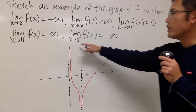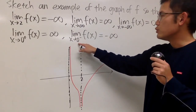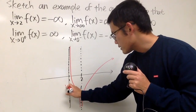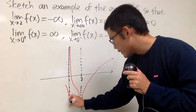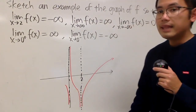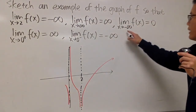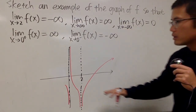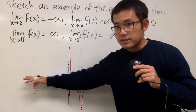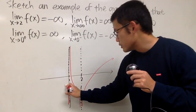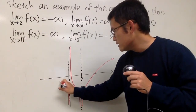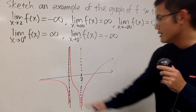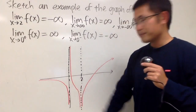We also look at when x is approaching 0 minus — we get negative infinity. So I will start with something like this. And lastly, when x is approaching negative infinity, we get 0. So that's the horizontal asymptote right here. I will just go like this. Very pretty, like this.